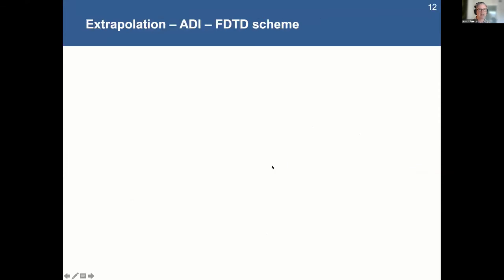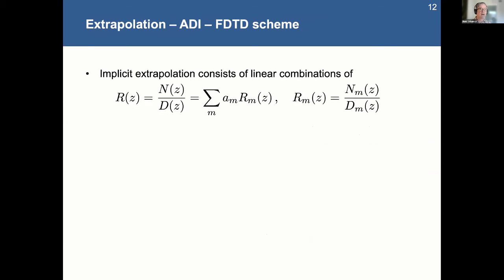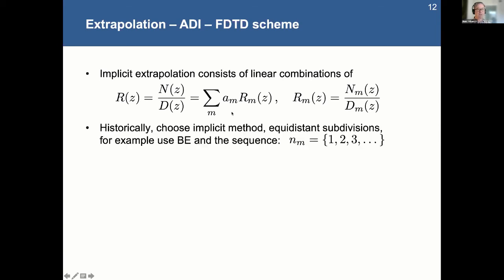So from an extrapolation method standpoint, working that into this ADI finite difference time domain scheme. You can write it out in terms of the linear stability analysis. And it's just, you know, a rational extrapolation and combining different size time steps. So each of these methods are some time step splittings. And then you do some linear combination of them that happens to cancel all the error terms.